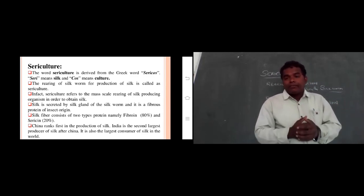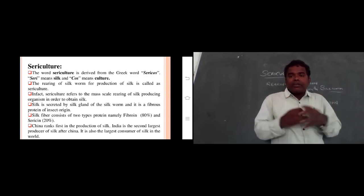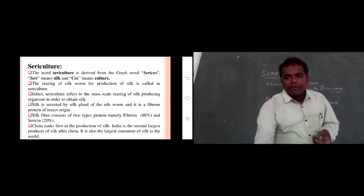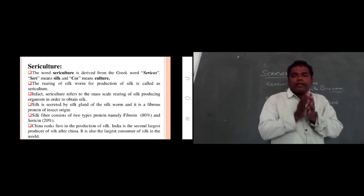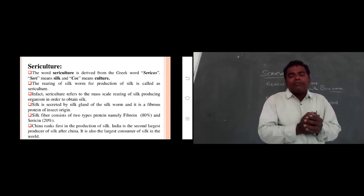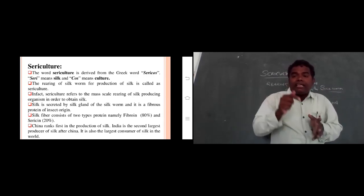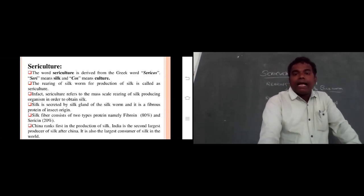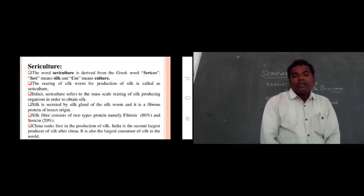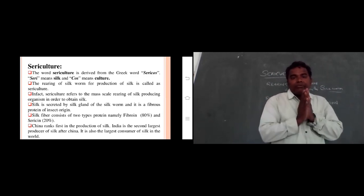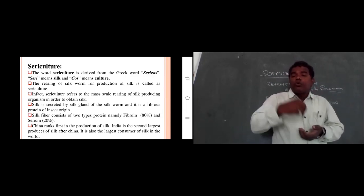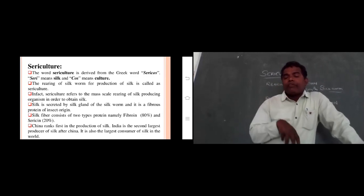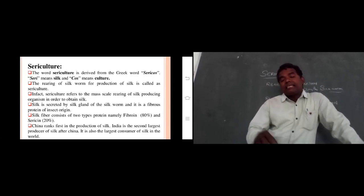Silk is secreted by insects. The silk is secreted from the salivary gland, which is modified as a silk gland in insects. The silk is secreted from the silk gland in the silkworm, and it is a fibrous protein of insect origin.